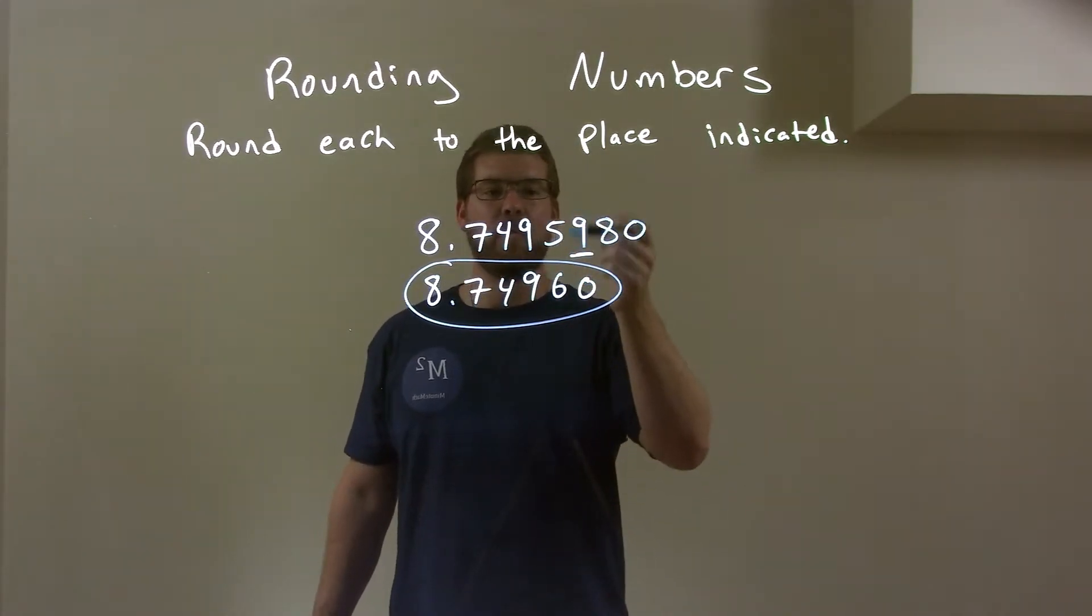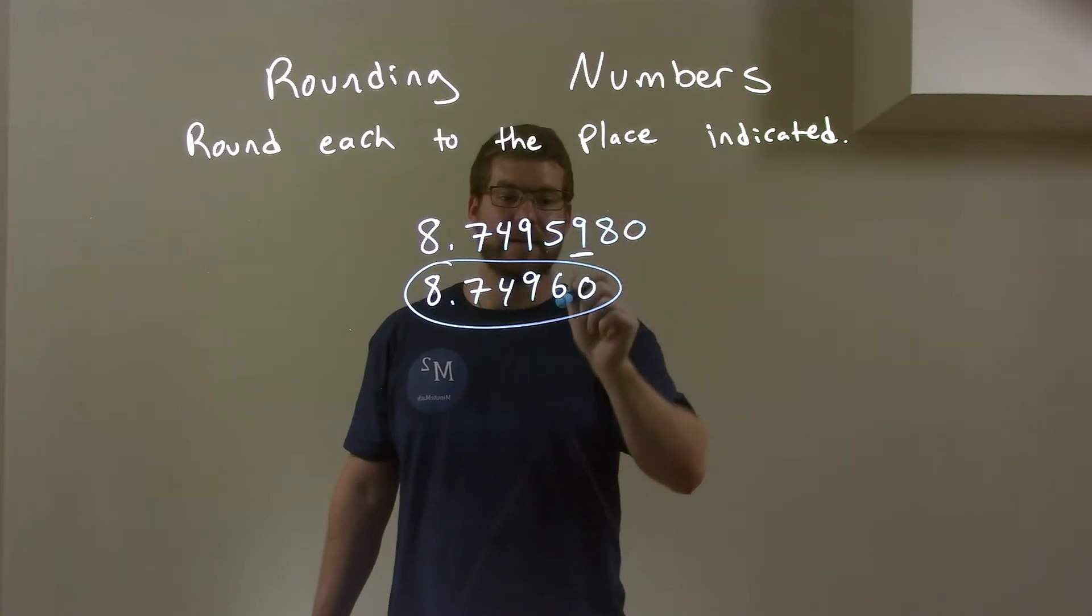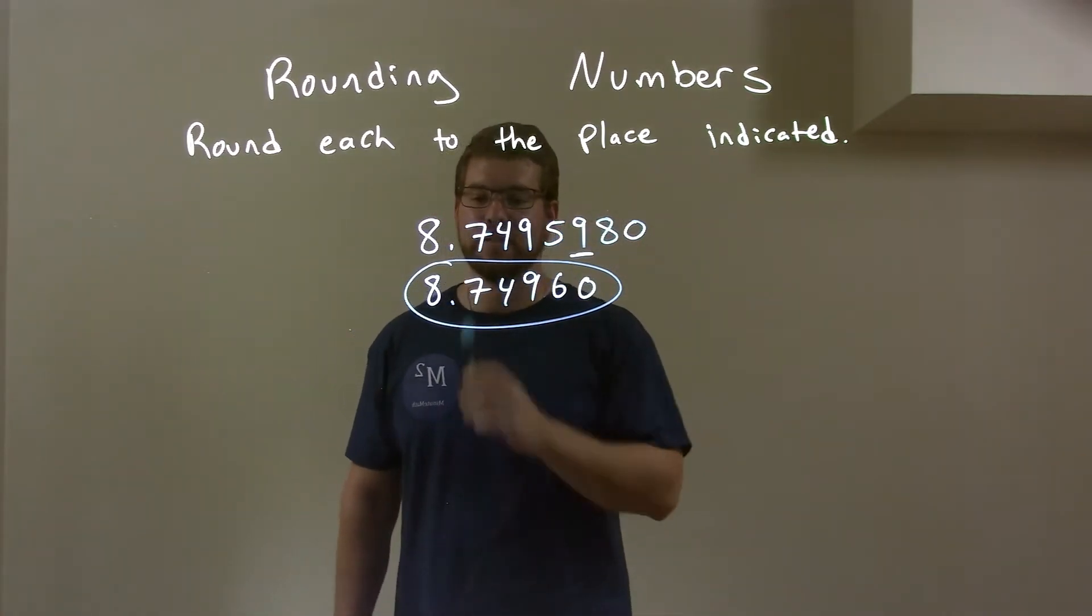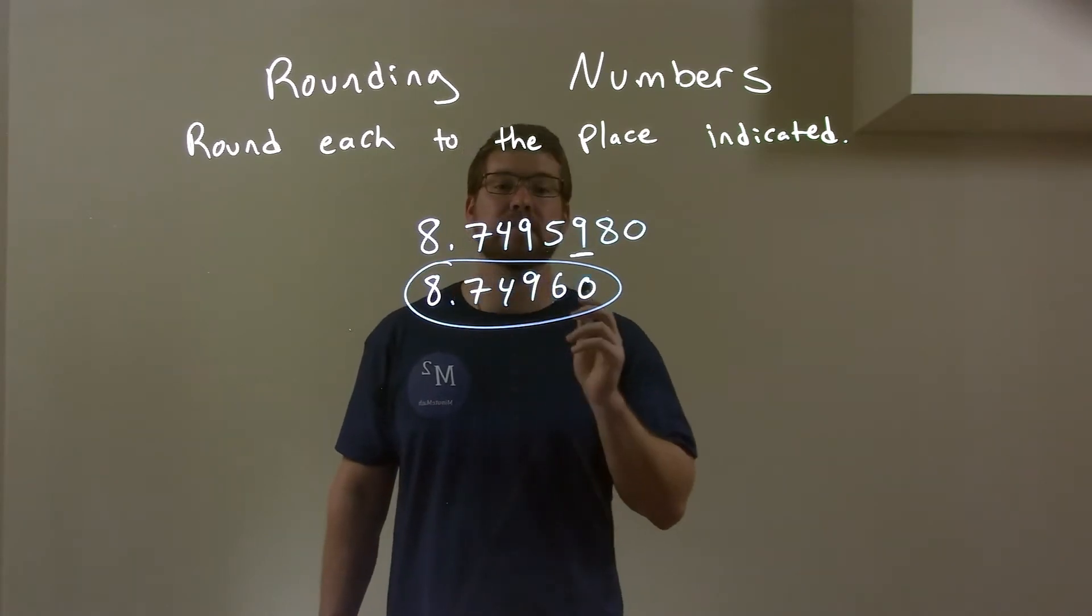0 comes down. That 1 goes to the 5, make it a 6. We're bringing down everything else. So again, our rounded answer is just 8.74960. We'll see you.